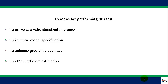Another reason is to enhance the predictive accuracy of the model. One key use of any model is to forecast. When you are using a model that is suffering from serial correlation to forecast, your prediction will not be right — the future value of the dependent variable may not be accurate. So you need to correct for serial correlation after detecting it so that your model can give you accurate predictions.